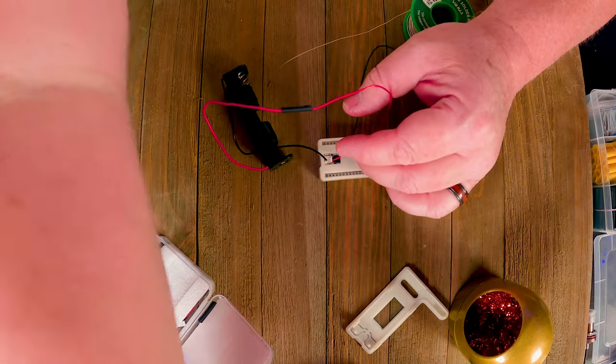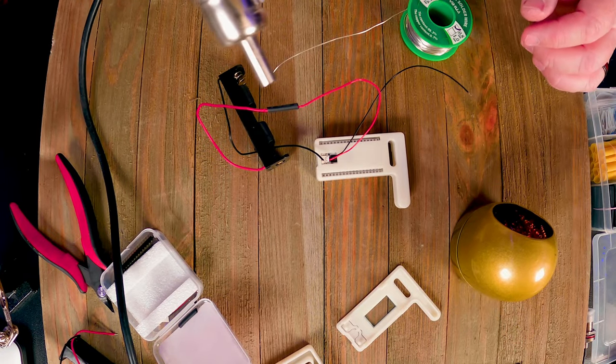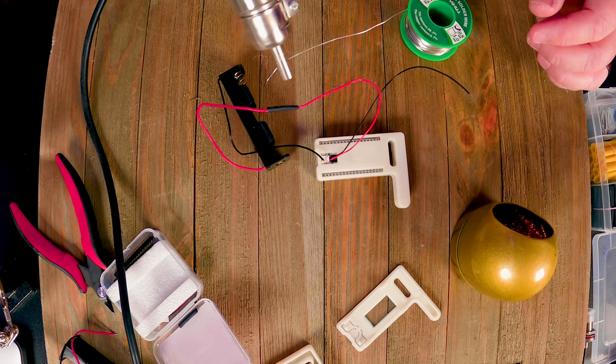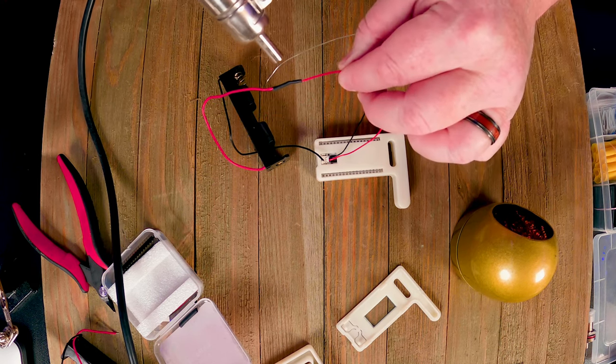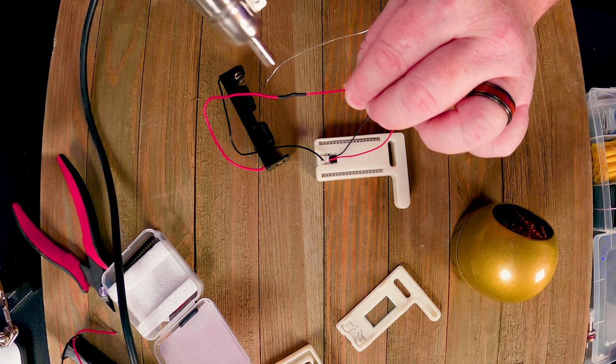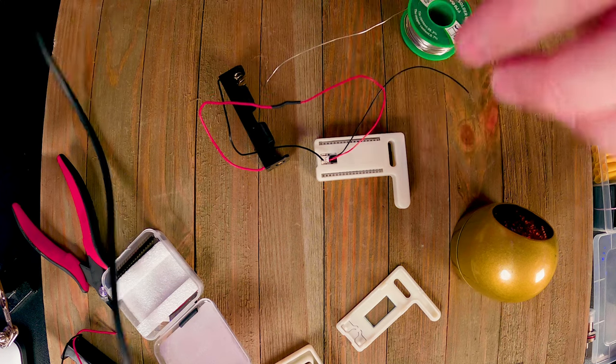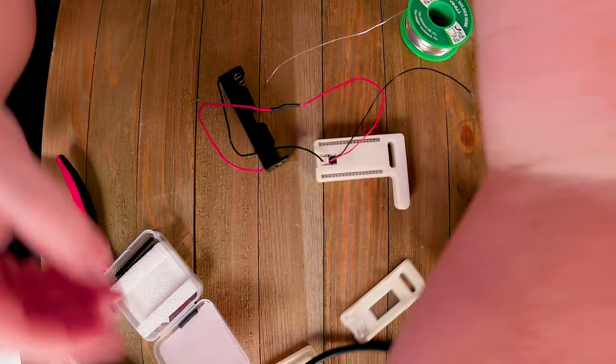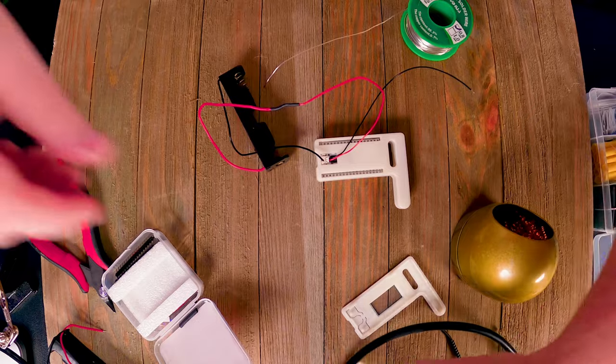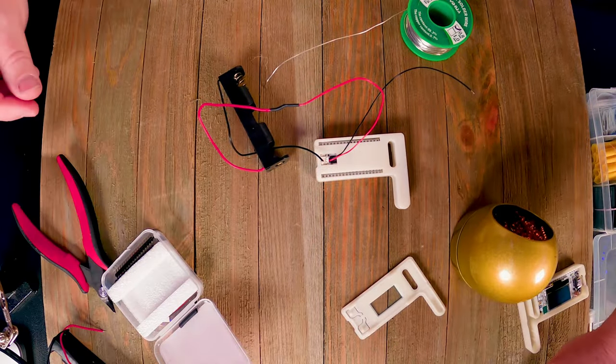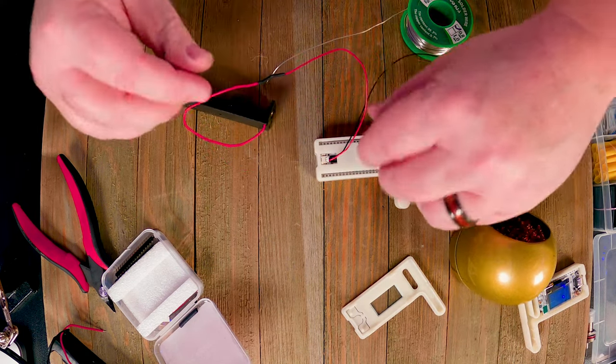Got the positive wire done. So now what I'm going to do is pull this heat shrink over. We'll just hit it real quick with the blower here, heat gun. It just kind of helps and cleans it up a little bit.